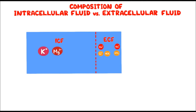The major cations in intracellular fluid are potassium and magnesium, and the balancing anions are either proteins or organic phosphates. Other notable differences involve calcium and pH balance. Intracellular fluid has a very low concentration of ionized calcium, whereas the calcium concentration in extracellular fluid is higher. Intracellular fluid is more acidic — it has a lower pH than extracellular fluid.